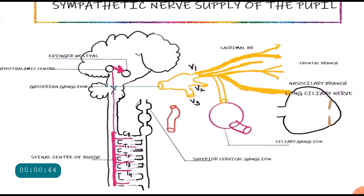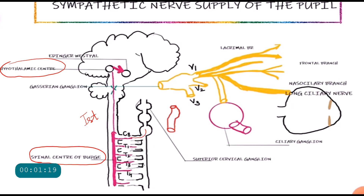The sympathetic nerve system starts from the hypothalamic center in the brain, and from there these neurons pass through the brain stem without relaying, going into the ciliospinal center of Budge. The ciliospinal center of Budge is located in the spinal cord at the level of C8, T1, T2, T3, T4 — this is called the first order neuron. From the ciliospinal center of Budge, the neurons pass through the sympathetic nerve chain, going through the inferior and middle cervical ganglia, and finally reach the superior cervical ganglion where they relay.